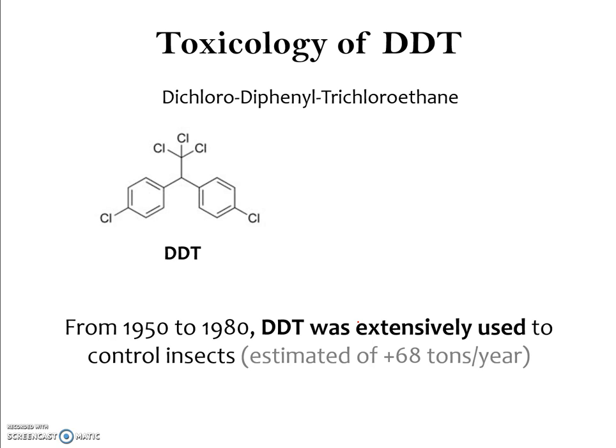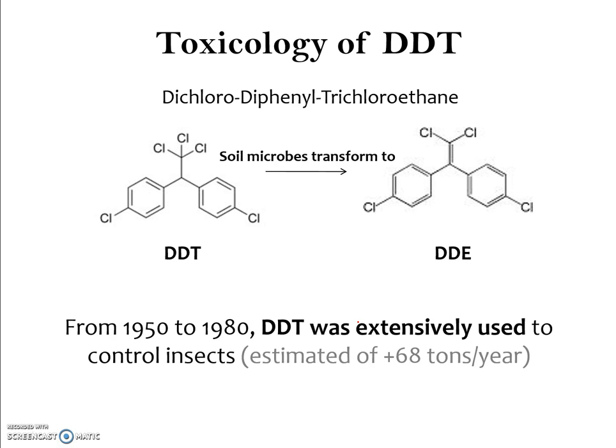One particular persistent organic pollutant is DDT, a common pesticide used prominently in the United States from roughly 1950 to 1980. It was extensively used to control insects, does a great job killing them, but also has negative effects on other organisms, which is why it was banned. The DDT molecule sprayed into the environment is converted into DDE — a different molecular structure — transformed in the soil by microbes. Both forms are toxic.